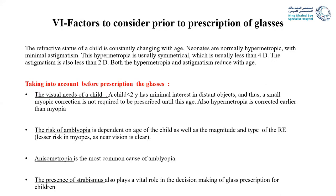Factors to consider before prescribing glasses: neonates are usually hyperopic, less than four diopters, also with astigmatism about two diopters — both will reduce with age. A child less than two years has minimal interest in distant objects, so myopic correction is not needed as near vision is still clear. Hypermetropia must be corrected earlier than myopia. Risk of amblyopia depends on the age, magnitude, and type of refractive error. Myopia is less amblyogenic than hypermetropia since near vision remains clear. Anisometropia is the most common cause of amblyopia, and the axis of astigmatism plays an important role in the decision to prescribe glasses.